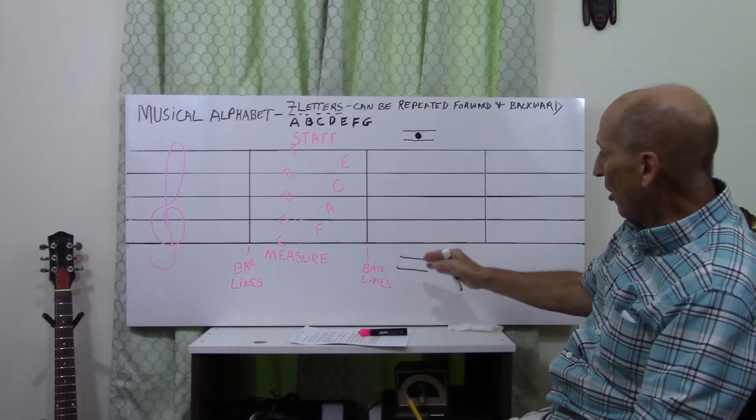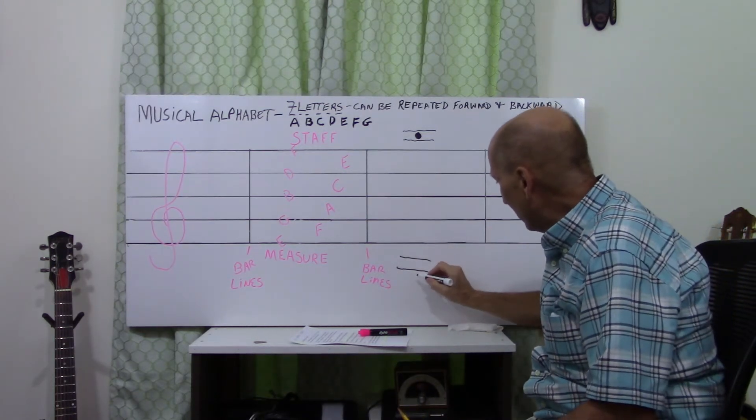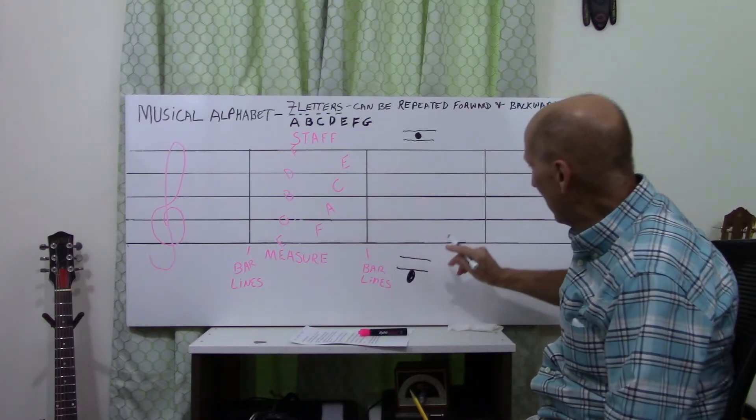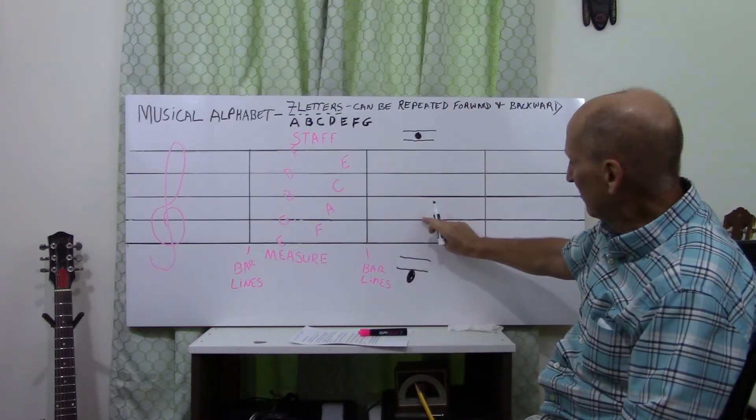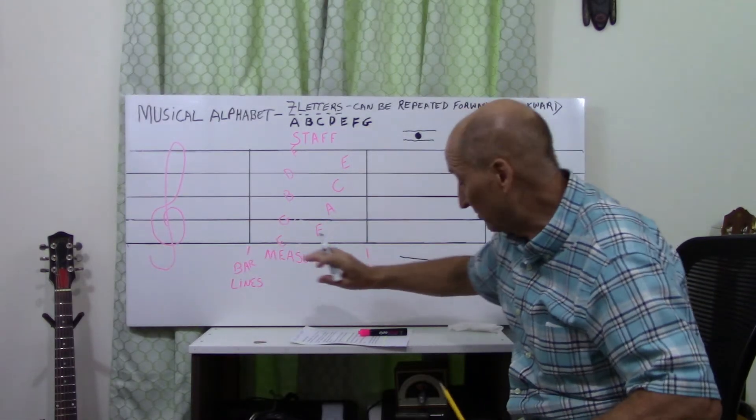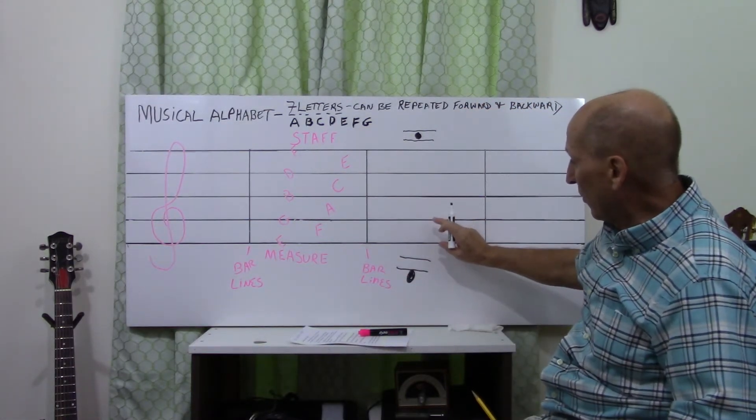Same difference, going backwards. Let's say we have a note here. So, here's G. We know that's a given, because we know that, again, from the G clef. G, we're going backwards.